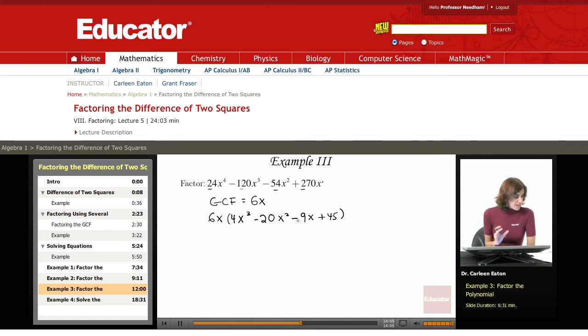Now, I would handle this by using grouping, because I've got a polynomial with four terms. So, I'm going to use grouping. Recall that, to use grouping, you're going to group the first two terms and the second two terms.